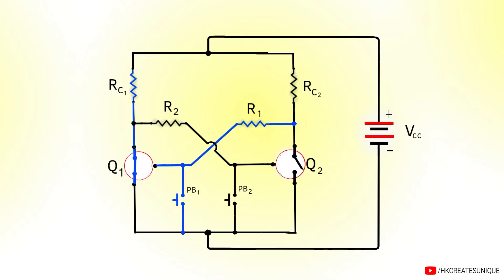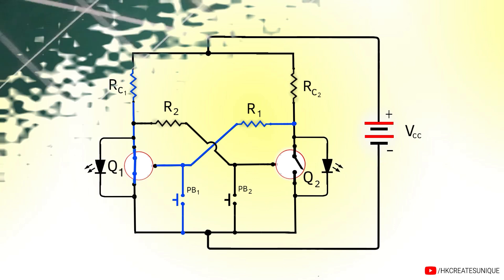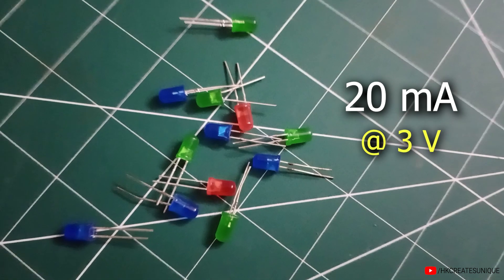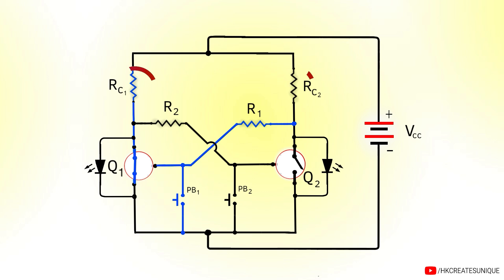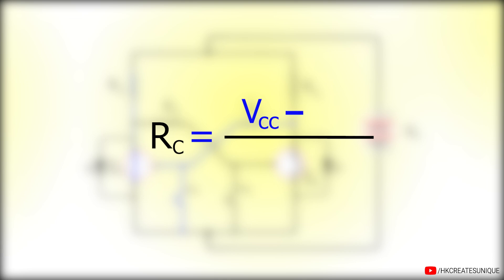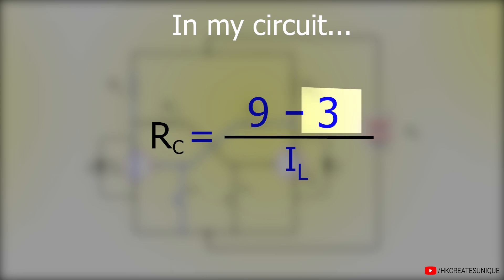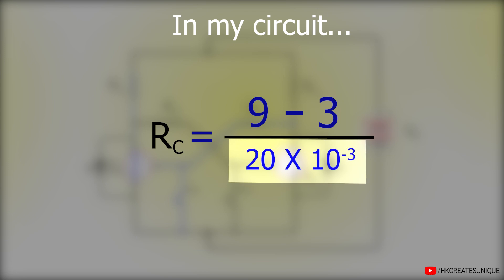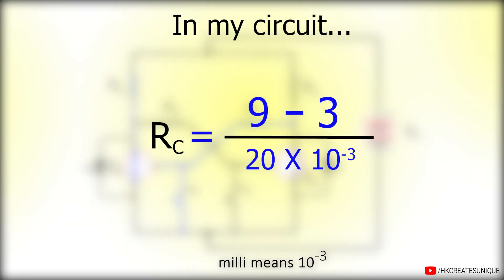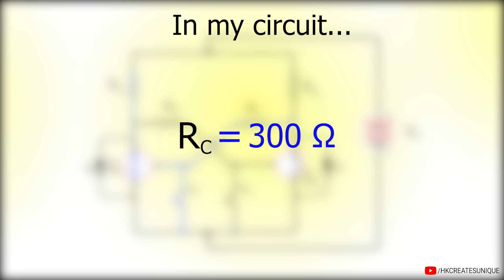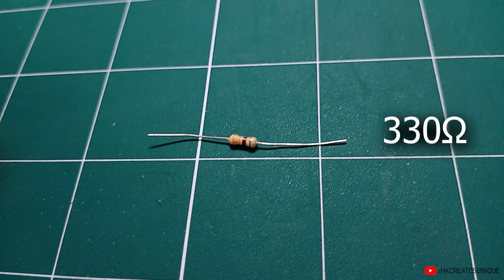The values of resistors depend on the loads connected to the circuit. LEDs take around 20 milliamps of current at 3 volts. The collector resistor RC should equal the supplied voltage VCC minus the load voltage VL, divided by the load current IL. With VCC = 9 volts, VL = 3 volts, and IL = 20 milliamps, we get RC = 300 ohms. The closest standard value is 330 ohms, used for both RC1 and RC2.